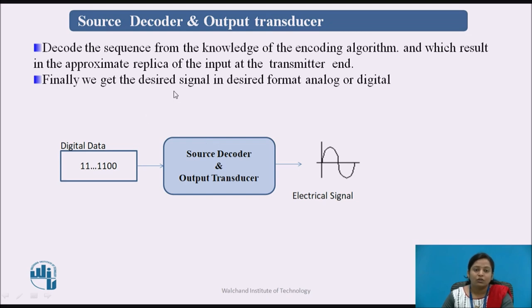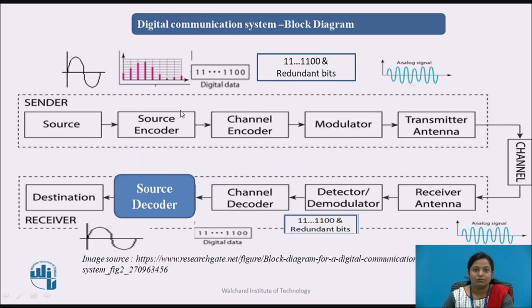Next is the source decoder and output transducer. It decodes the sequence using knowledge of the encoding algorithm, resulting in an approximate replica of the input at the transmitter end. Finally, we get the desired signal in the desired format — analog or digital. At the destination, the output transducer converts the electrical signal back into the original information. For example, a speaker converts the electrical signal into a sound signal.